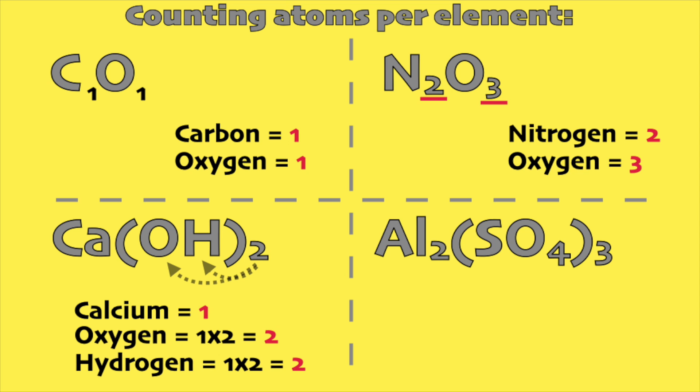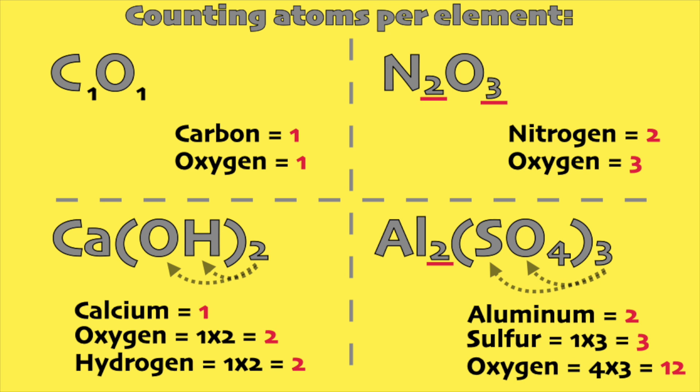In the last example, aluminum has two then inside the parenthesis, SO4 has one times three so it is three and oxygen has four times three so it is twelve.